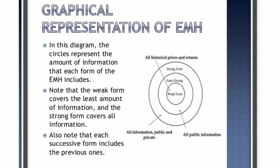Weak form is the first, semi-strong is the second, and strong form is the third — each successive form includes the previous one. The weak form states that past prices and other market statistics provide no information that can be used to predict future prices. Price changes should be random because it is information that drives changes.